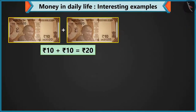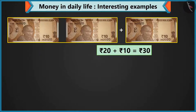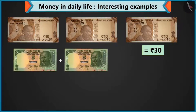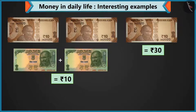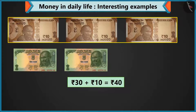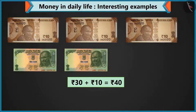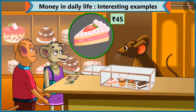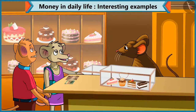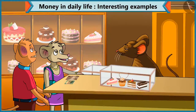Look Chi Chi, adding 2 notes of 10 makes 20. Adding 10 to 20 makes 30. And 10 rupees by adding 2 notes of 5. Yes, 40 rupees on adding 30 and 10. But this pastry is worth 45 rupees. Yes, Chi Chi. We have to add 5 rupees to this 40 rupees.